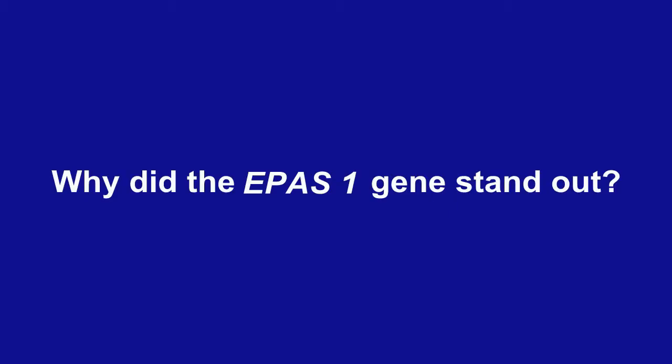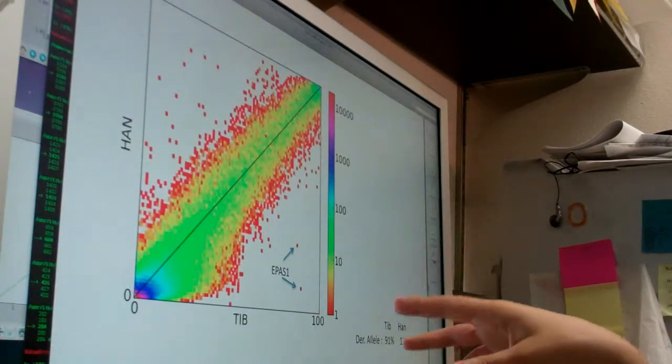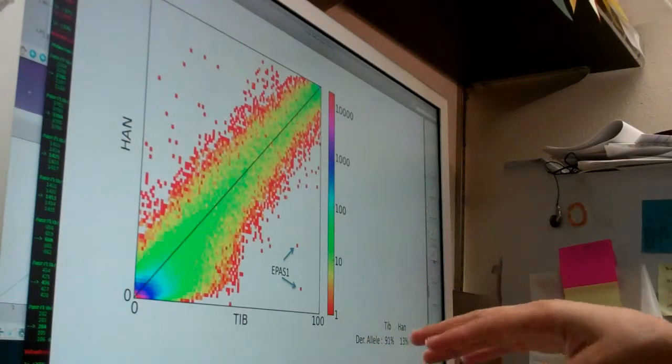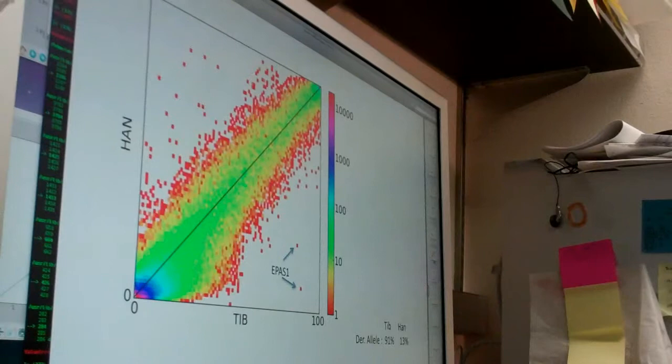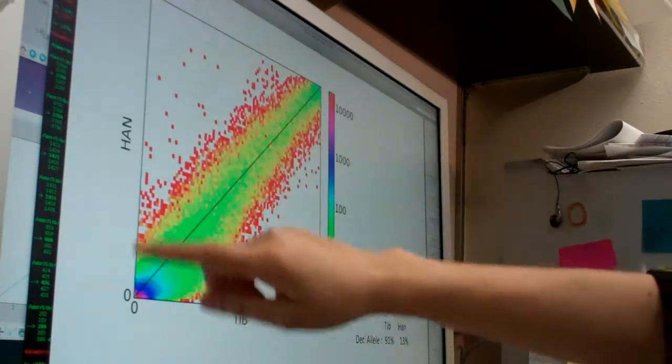What made the EPAS1 gene stand out from the others? In the EPAS1 locus, we found two mutations that have a really large frequency difference between the Tibetan population and the closely related Han population. So here I'm showing you the frequencies of all the mutations that we identified in the Tibetan and the Han populations. This is the Tibetan frequencies and these are the Han frequencies.